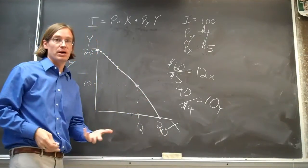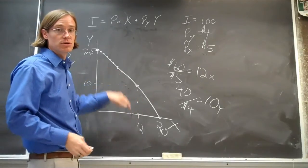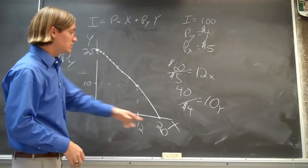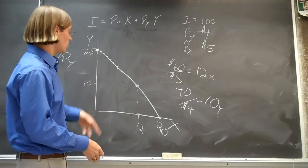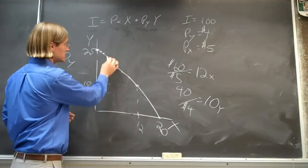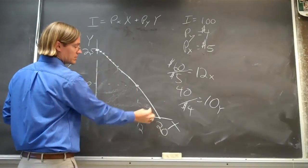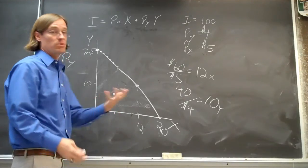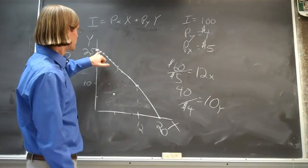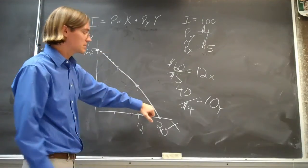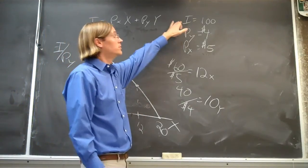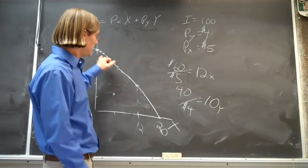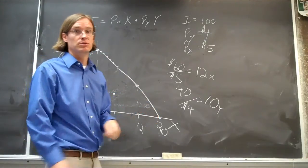This line is your budget line — it's the maximum amount of these two goods you could purchase. If you wanted to purchase five units of good X and five units of good Y, you could — you'd be within your budget set. This entire area under the curve is your budget set. You'd be at five and five with a whole bunch of money left over. So if you're on your budget line, you're consuming all of your income, spending every dollar, and getting the maximum amount of those two goods that you can.